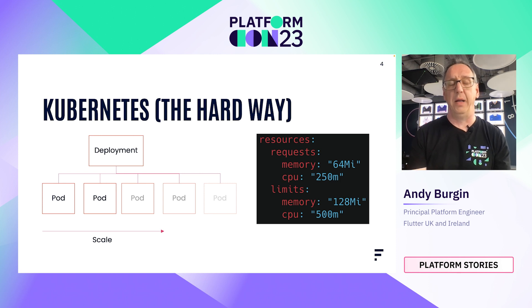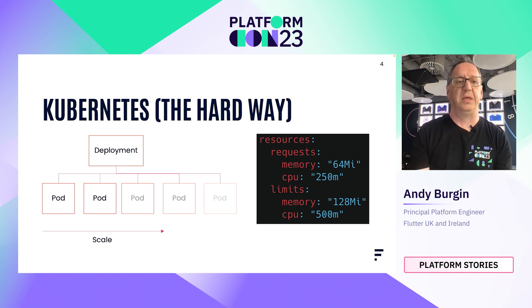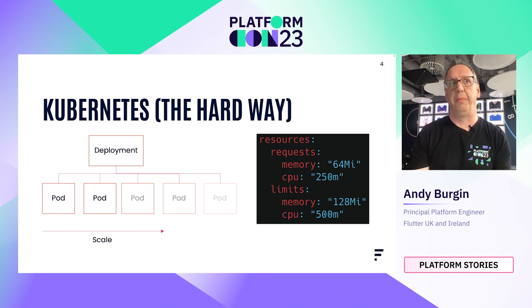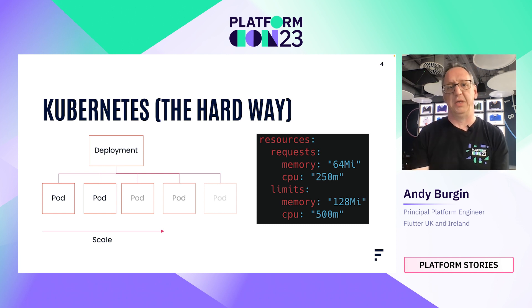Developers declare the requirements for their containers in a manifest, typically as requests and limits. Requests are the amount of guaranteed resource a container will need — in this case, a quarter of a CPU and 64 MB of RAM — and the limit indicates the amount it will burst into. The request is super important because it will be reserved by the Kubernetes control plane and ring-fenced for the container. The more containers run, the more CPU requests, the more reservations required, and getting these numbers right can be quite tricky.